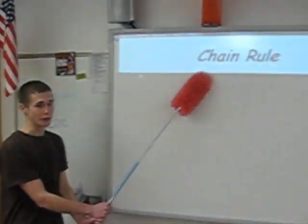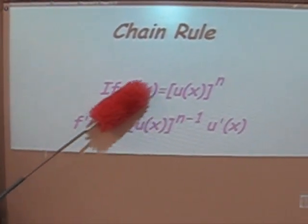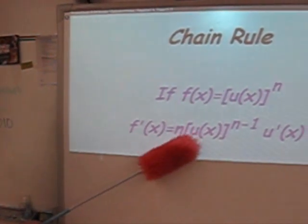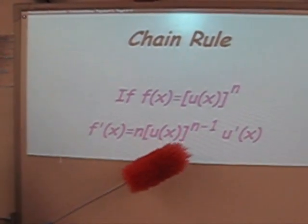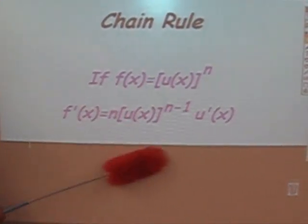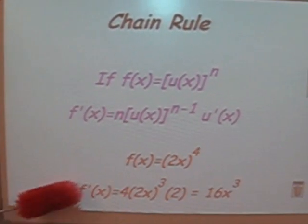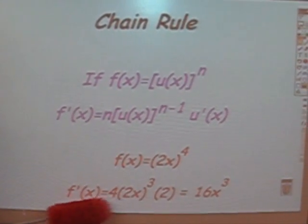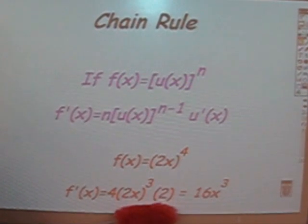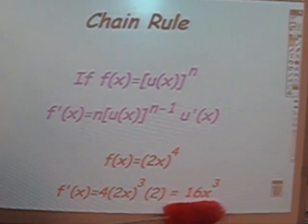Alright, this is the chain rule here. Now, with the chain rule, you just take the derivative of everything. So if you have f of x equals u of x to the n, then f prime of x would be n parentheses u of x to n minus 1. And since you take the derivative of everything, you take u prime and multiply u prime of x to this equation. So as an example, f of x equals parentheses 2x to the fourth. You first start: f prime of x equals 4 parentheses 2x cubed, and then since you do the chain rule, which is 2x right here, you take that out and you have the 2, multiply with this part of the equation. And with simple algebra, it comes out to be 16x cubed.